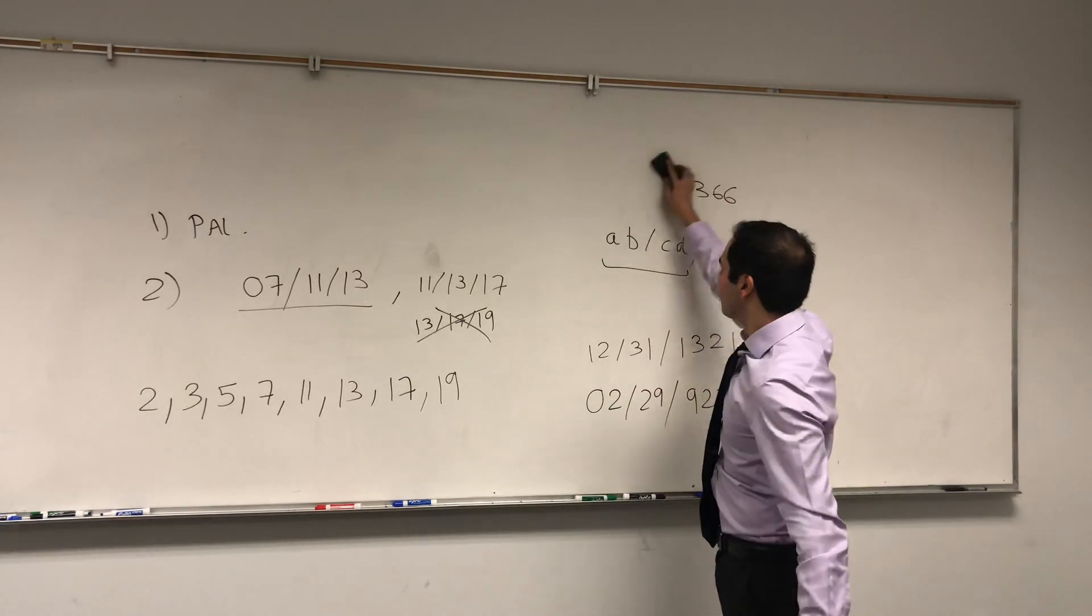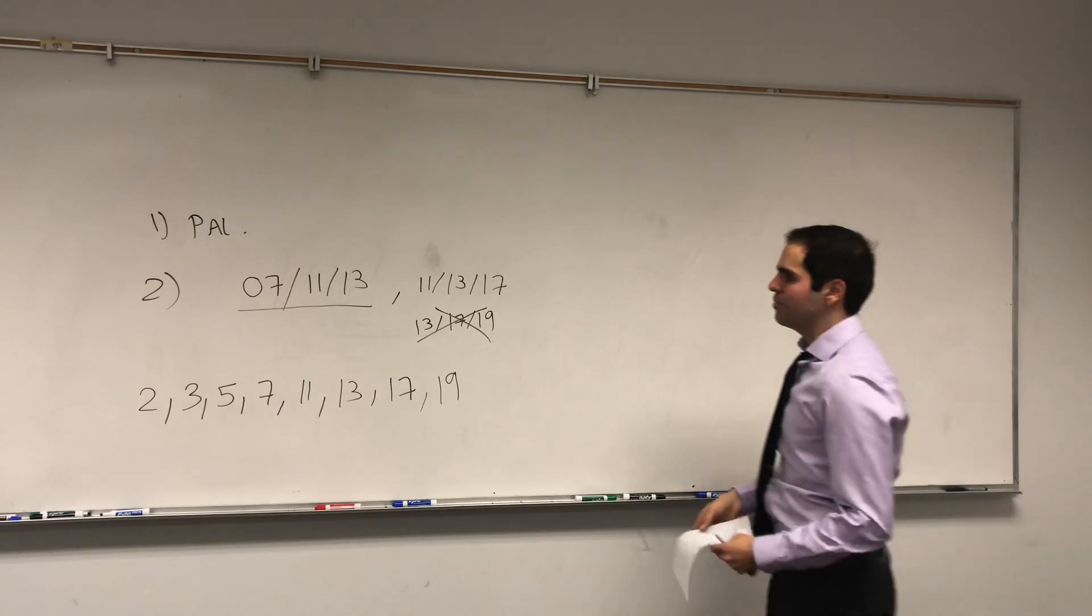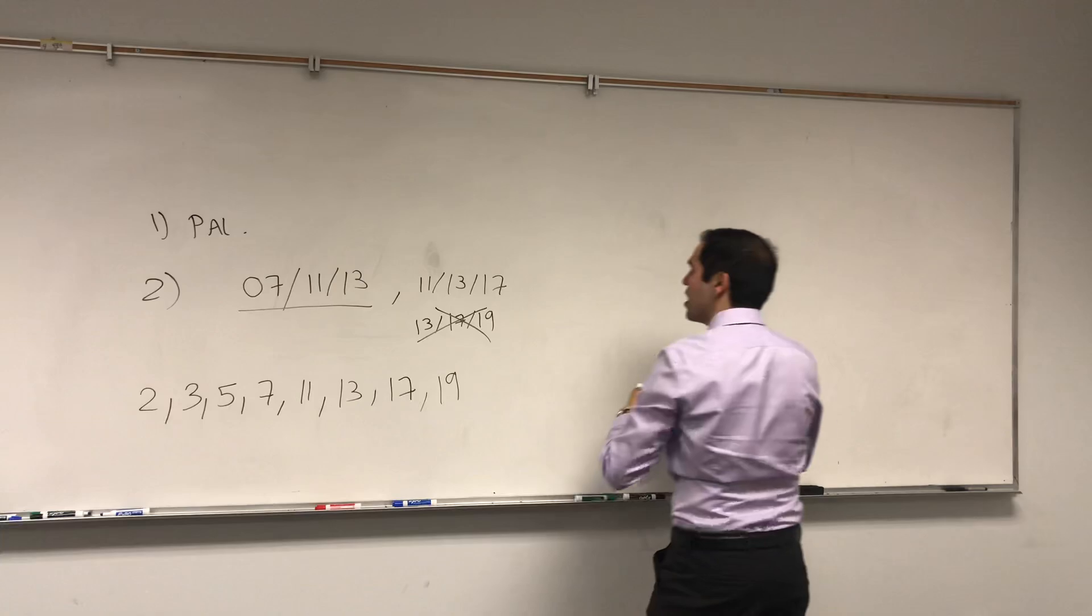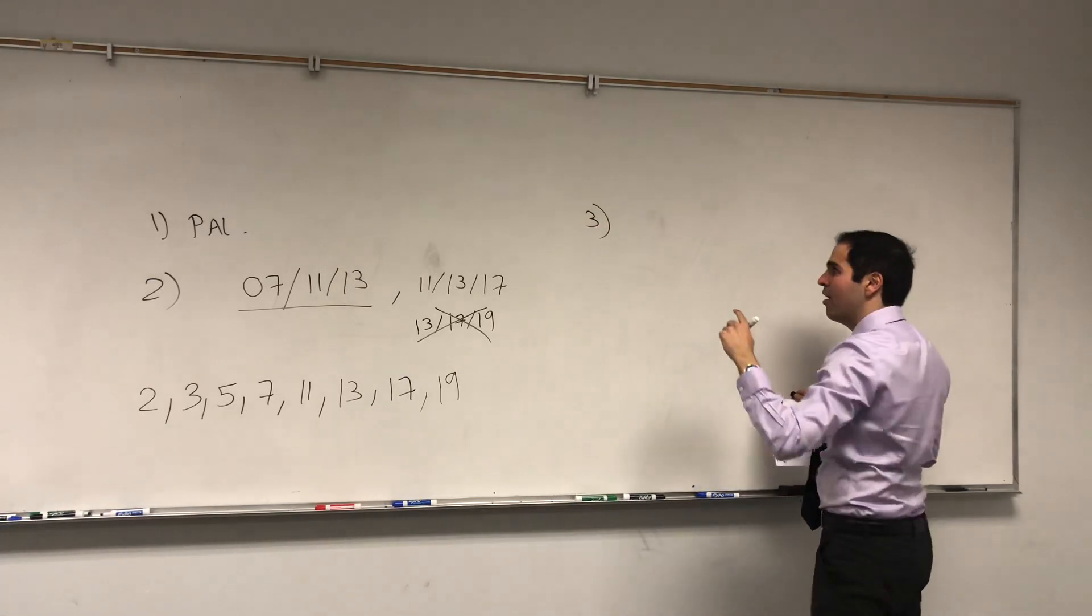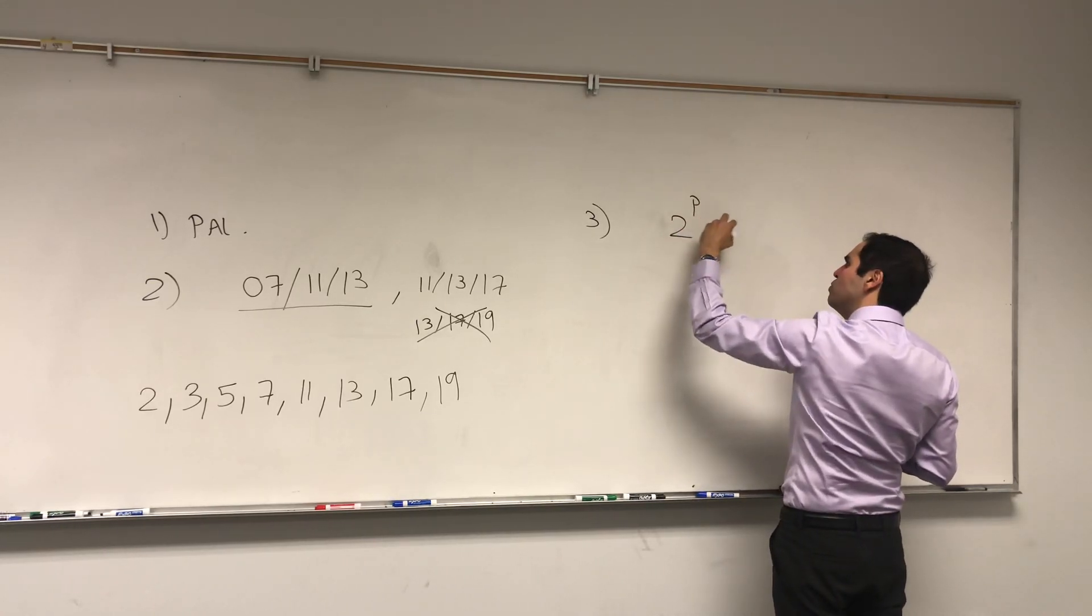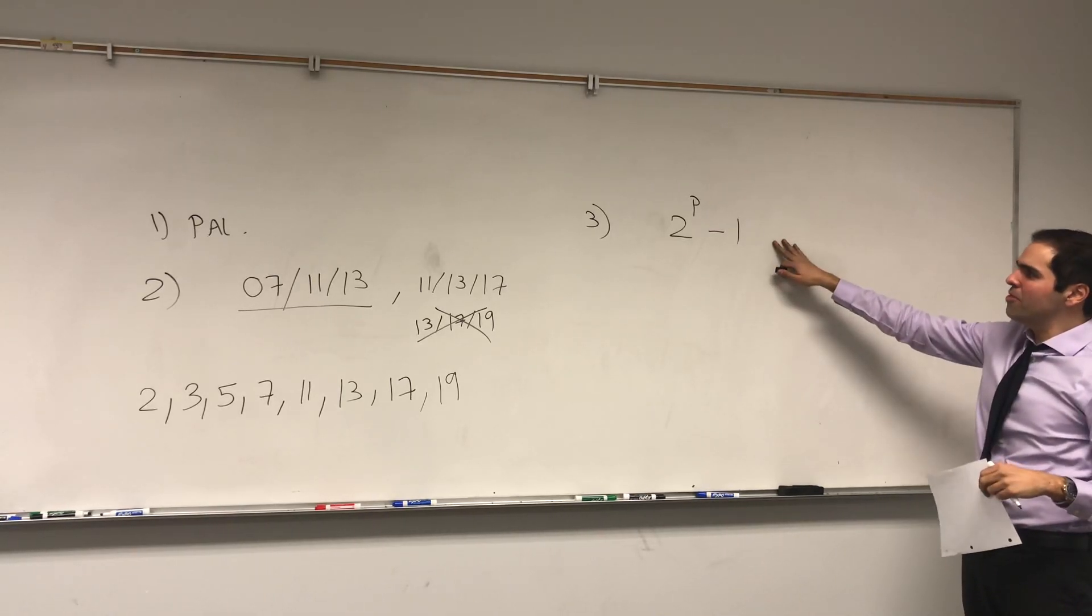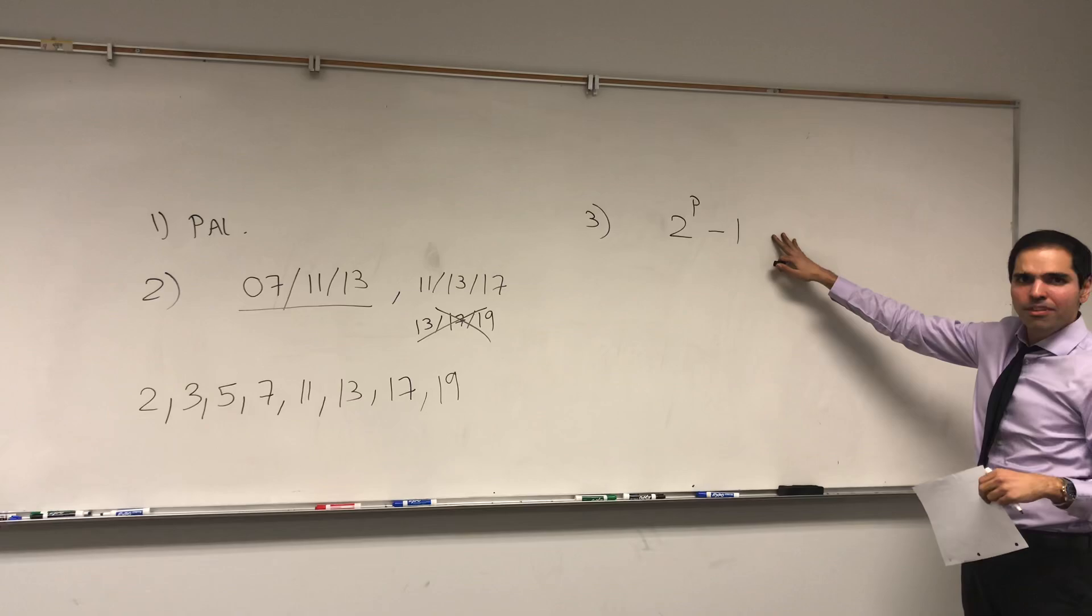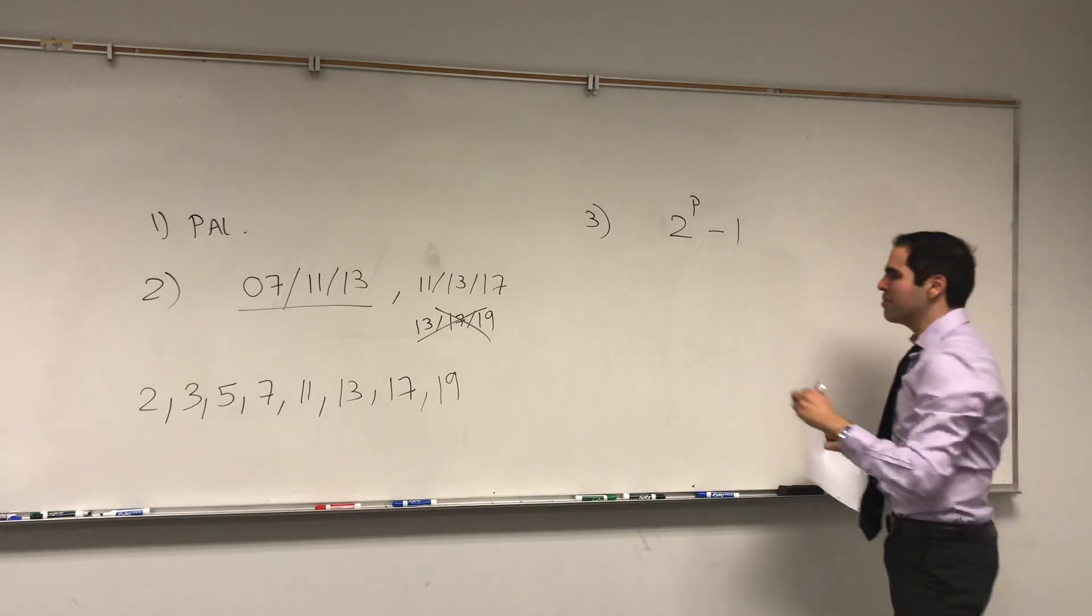However, there are other kind of cool years. And actually, speaking of which, so that was a prime where there was also other numbers, even better than primes, which are Mersenne numbers, which are formed 2 to the p minus 1, where p is a prime number.